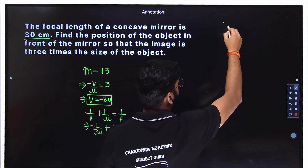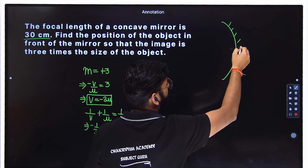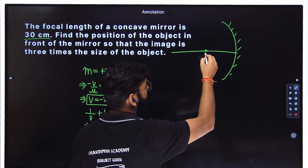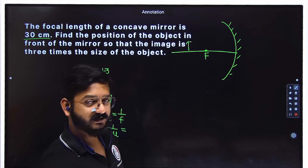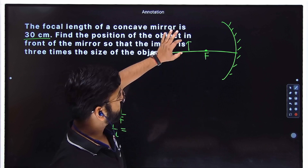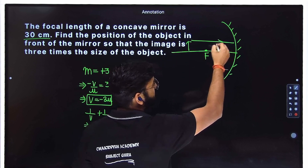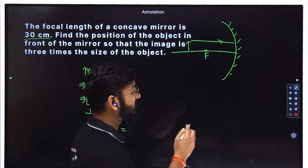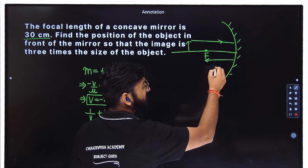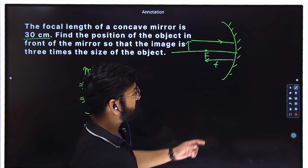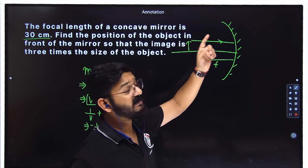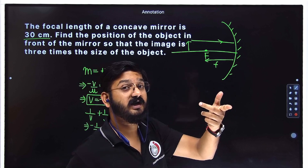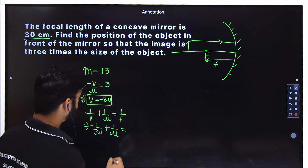For a concave mirror, if the object is on the left side, incident light goes in one direction and the focus is measured in the opposite direction of incident light. The focus lies on the same side as the object. Since focal length is measured in the opposite direction of incident light, it is negative. So the focal length of a concave mirror is minus 30 centimeter.